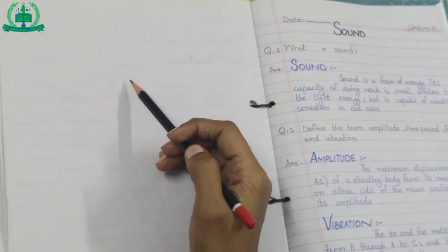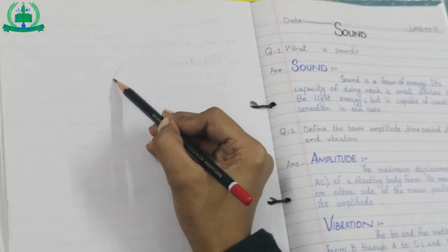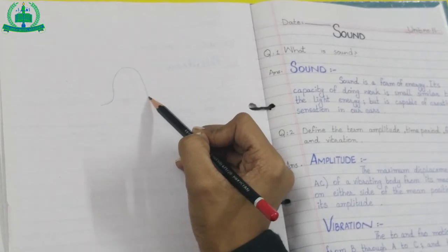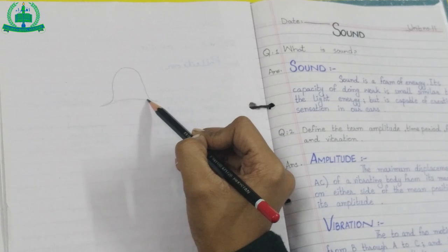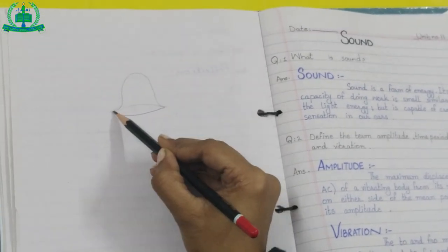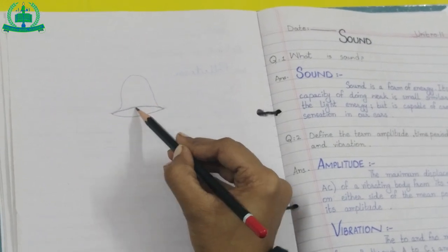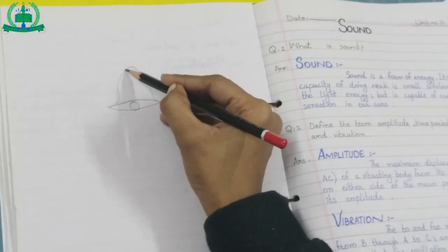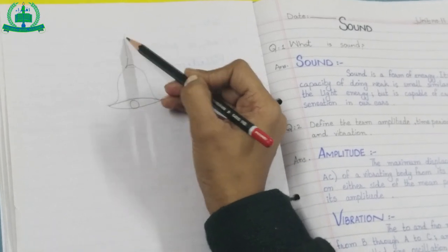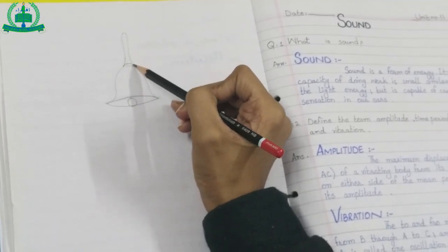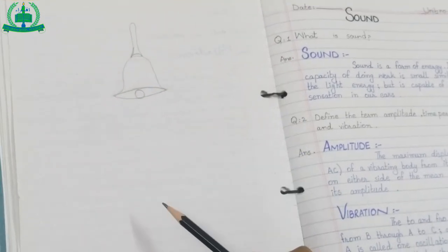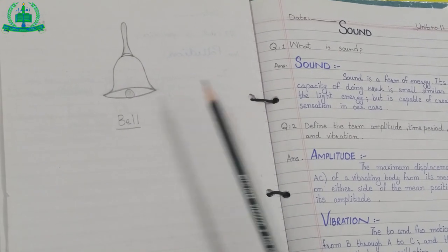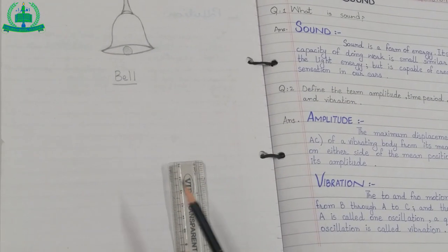Now let's draw a diagram of time period. This is a bell — a bell produces sound. Draw this diagram next to question number one. Let's draw another diagram.